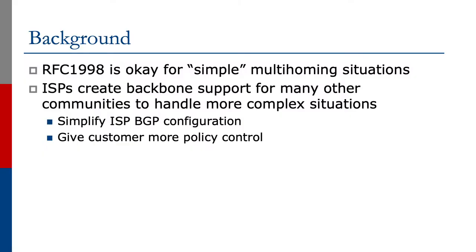RFC 1998 is okay for simple multi-homing situations where you have just one or two links to the same ISP and very simple needs to set local preference. ISPs create backbone support for many other communities to handle more complex situations. The goal is to simplify the ISP BGP configuration — once you decide how things work, you set it up once and don't have to keep fiddling, giving the customer more policy control.